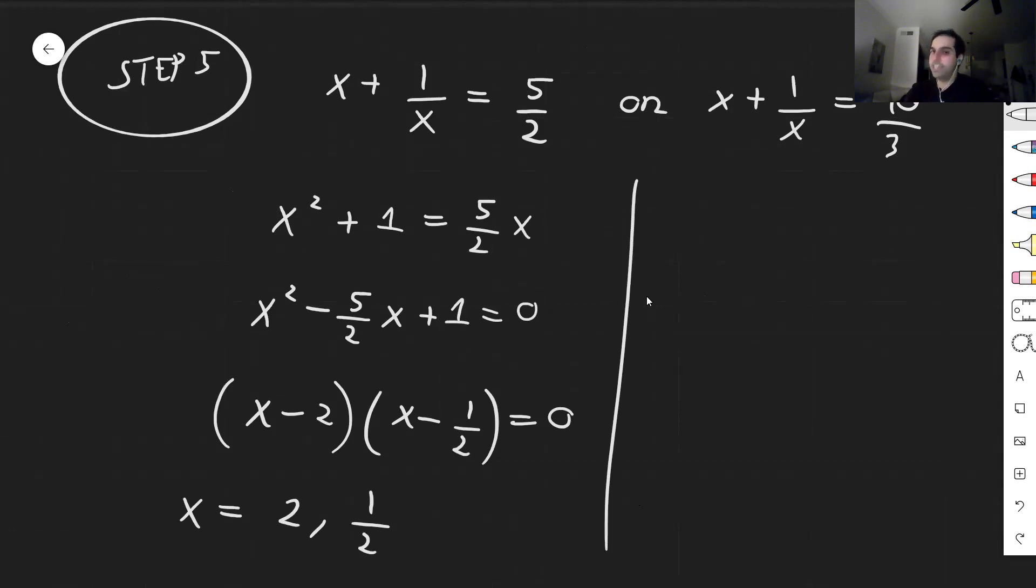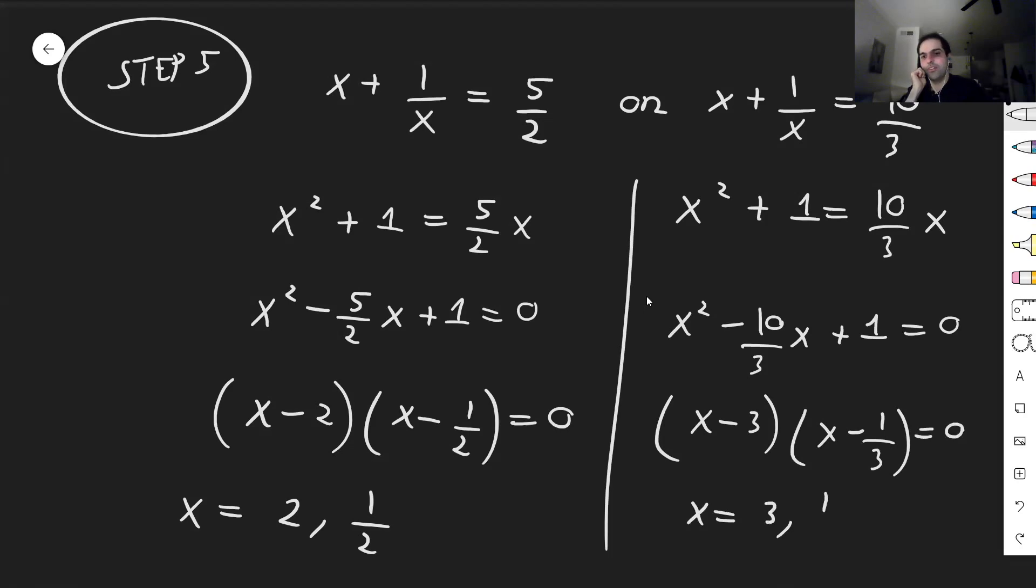Or you play the same spiel, but with the second equation. x squared plus 1 equals 10 thirds x. x squared minus 10 thirds x plus 1 equals 0. And this becomes, I believe, x minus 3 times x minus 1 third equals 0. And that gives you x equals 3 comma 1 third.